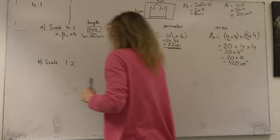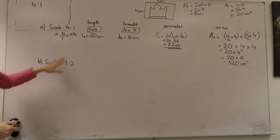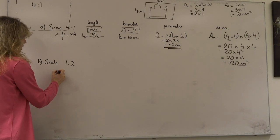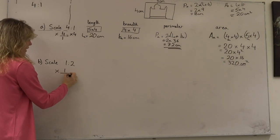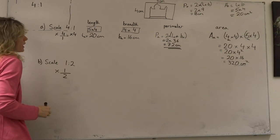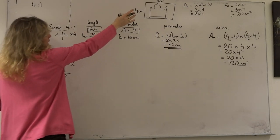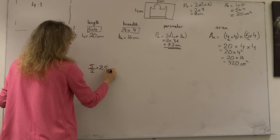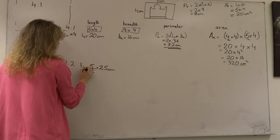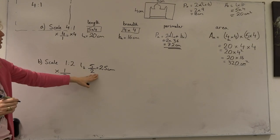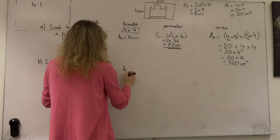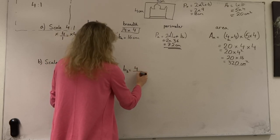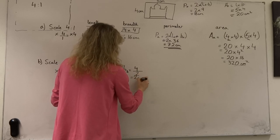What happens when we do a reduction instead? We're going to make this picture at a scale of 1 to 2. Our magnification factor is the first number divided by the second, so we multiply by a half. This gives us a length of 5 centimetres times a half, which is 2 and a half centimetres. The breadth of sketch B would be 4 centimetres multiplied by a half, which is 2 centimetres.